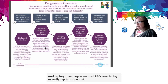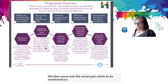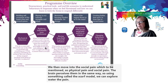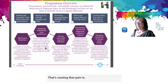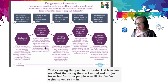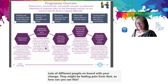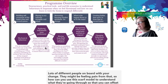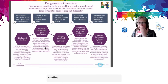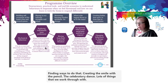How can you shift into a much more growth mindset where you're more curious to explore and to learn and to embrace that change? We then move into social pain — physical pain and social pain, the brain perceives them in the same way. Using something called the SCARF model, we explore what pain is doing to us, what's causing that pain in our brain, and how we can offset that — not just for us, but for other people as well. Finally, we move into something called 'hunting and laughing,' which is around dopamine and endorphins and getting that balance — creating the smile with the pencil, the celebratory dance — lots of tools that you can go away and use straight away.